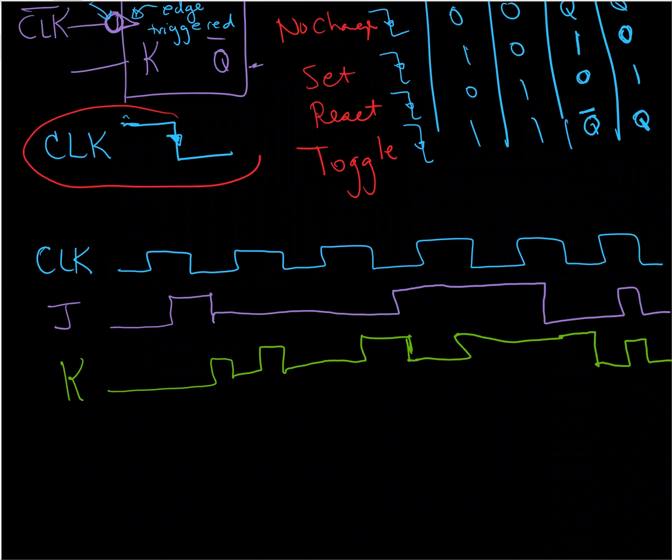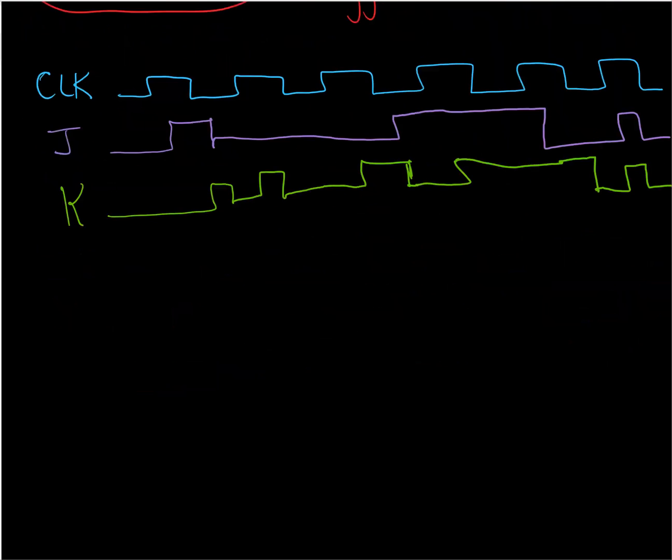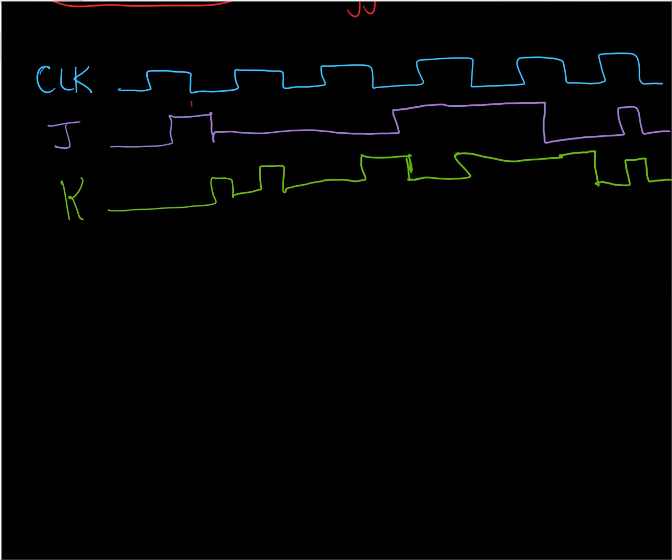So remember we said it's the falling edge of the clock because we've got this negative edge triggered symbol going on here. So it's the falling edge of the clock where the J and K inputs will have an effect on the output. So I'm going to draw a line downward, identifying where all those falling edges are.